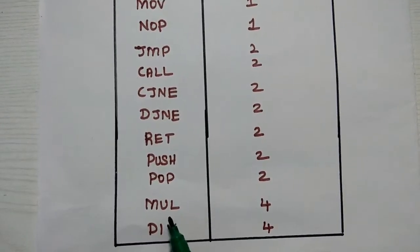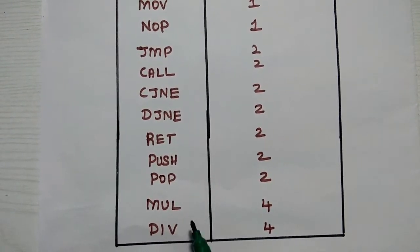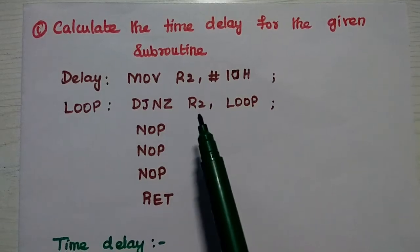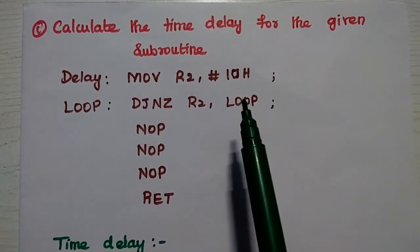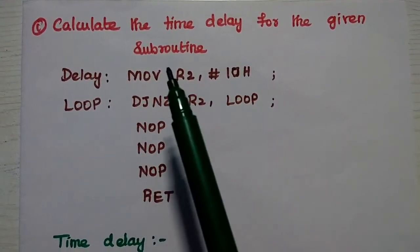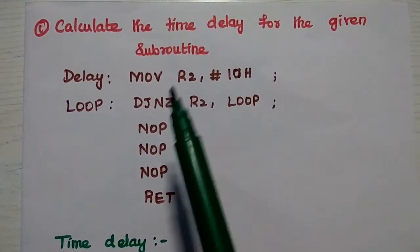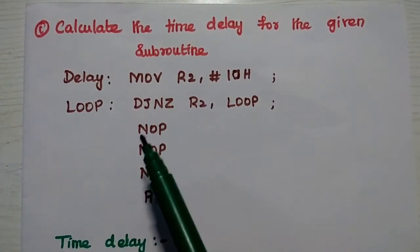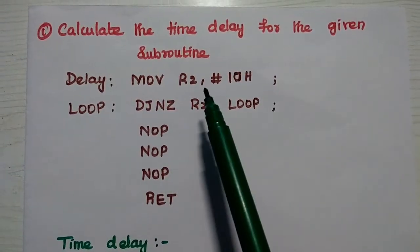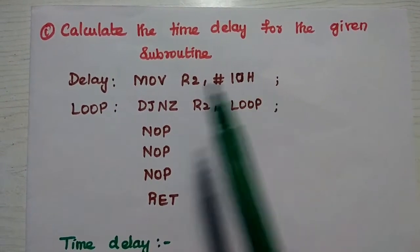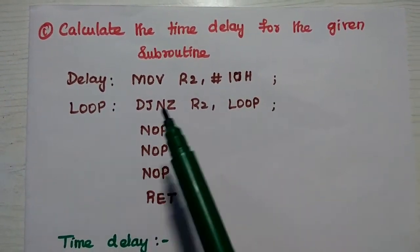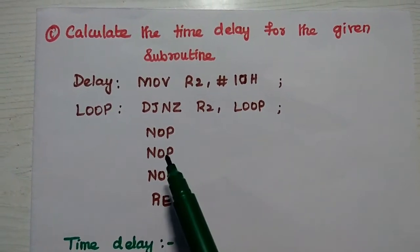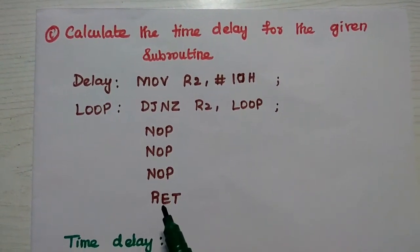For multiplication as well as division, we need four machine cycles. Now let's solve the problems in time delay calculation. The first one is: calculate the time delay for the given subroutine. The subroutine program is: DELAY: MOV R2, #10h; LOOP: DJNZ R2, LOOP; NOP; NOP; NOP; RET.